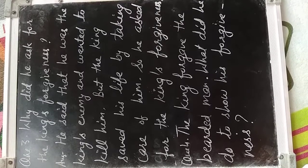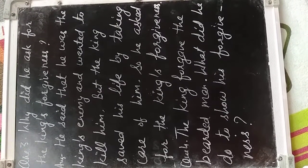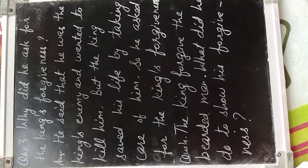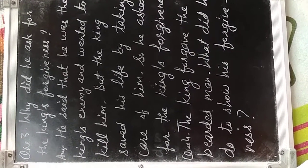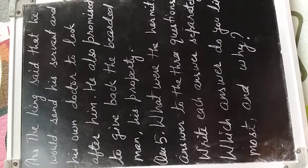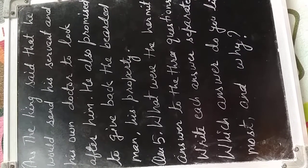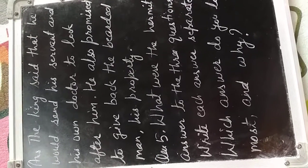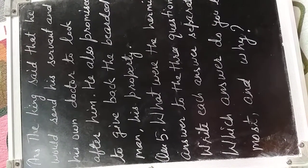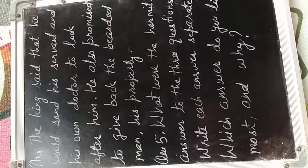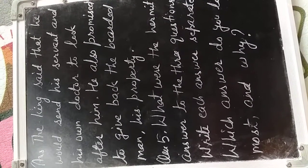Question number four: the king forgave the bearded man. Raja ne dari wale vakti ko maaf kar diya. What did he do to show his forgiveness? Aur apni forgiveness dikhanne ke liye usnei kya kiya? The answer is: the king said that he would send his servant and his own doctor to look after him. Ki vahe apne nokkar ko aur apne doctor ko uski dhekwal ke liye bhejega. He also promised to give back the bearded man his property. Aur usnei ye bhi usse waada kiya ki vahe uski property ko vaapis lota dega.